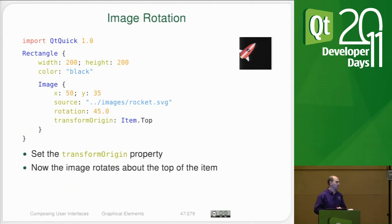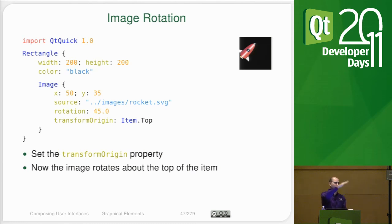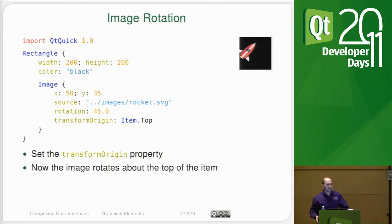I mentioned that images default to rotating about their center, and actually all objects have this concept of a transformation origin. So that's not so useful maybe with the rocket ship, but for something like making a gauge with a needle — the gauge face is a separate image and the needle is a separate image — to set the gauge to a particular value we just need to rotate that needle, but we need the needle to rotate not about the center but about its end. So all items have a transformation origin and you can set that either via X, Y coordinates or you can use things like top, bottom, left, and right.